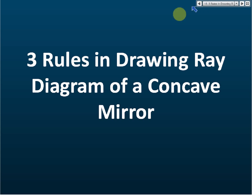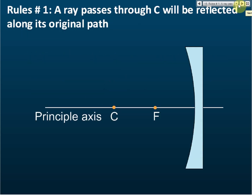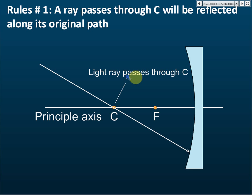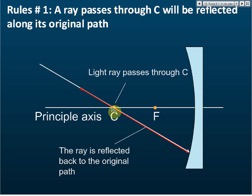Three rules in drawing a ray diagram of a concave mirror. Rule number one: a ray that passes through C — the center of curvature — will be reflected back along its original path. So if a light ray moves and passes through C, it will be reflected back through the same path. As long as it passes through C, it will follow the same path back.